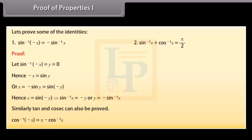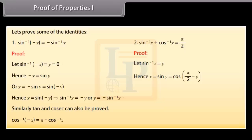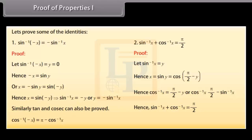To prove sin⁻¹x + cos⁻¹x = π/2: Let sin⁻¹x = y. Then x = sin y = cos(π/2 - y). Hence cos⁻¹x = π/2 - y = π/2 - sin⁻¹x. Therefore sin⁻¹x + cos⁻¹x = π/2. Similarly, the other two complementary pairs can also be proved.